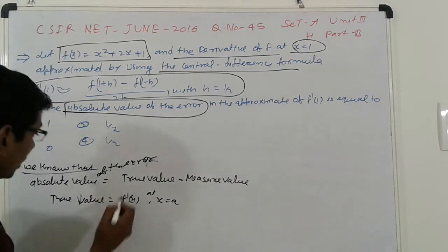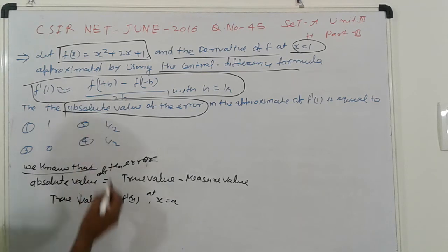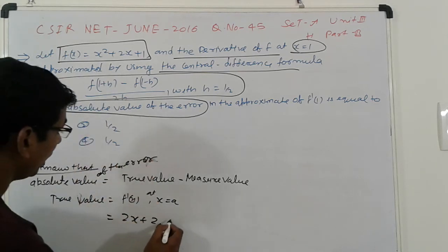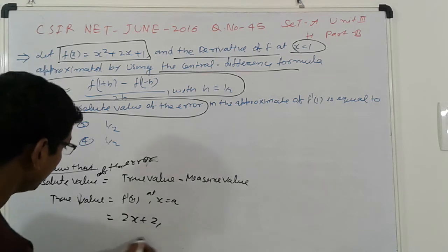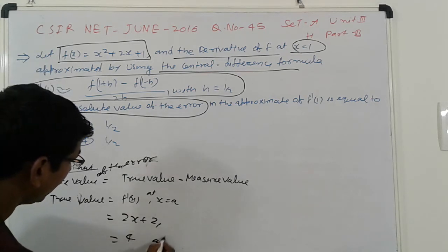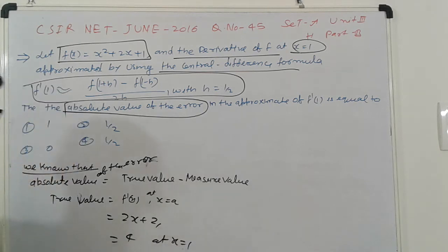So here, f'(x) is 2x + 2, and suppose true value is 4 at x = 1, so that is f'(x), here.